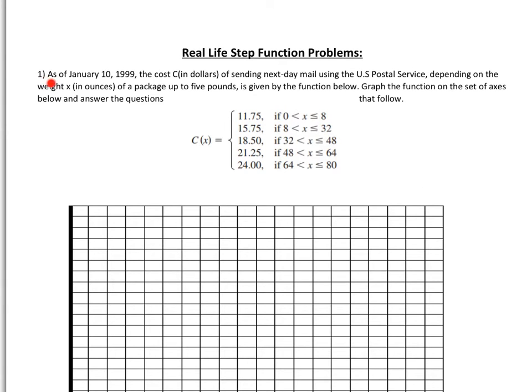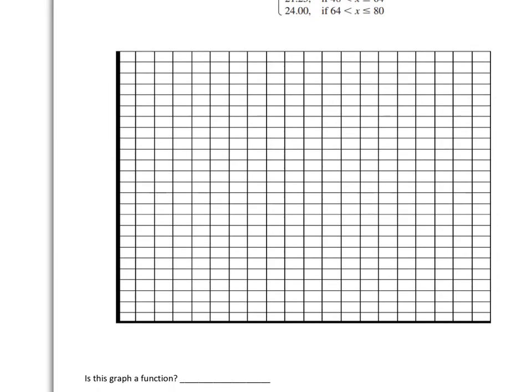Okay. I'm going to start reading here. As of January 10th, 1999, the cost, C, in dollars of sending next day mail using the U.S. Postal Service, depending on the weight, X, in ounces of a package, up to five pounds, is given by the function below. Graph the function on the set of axes below and answer the questions that follow.